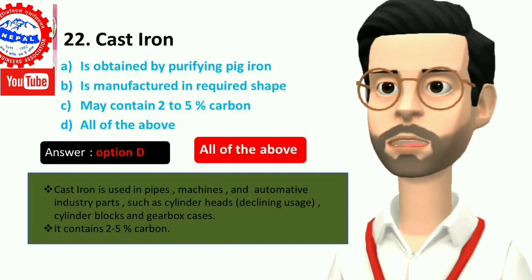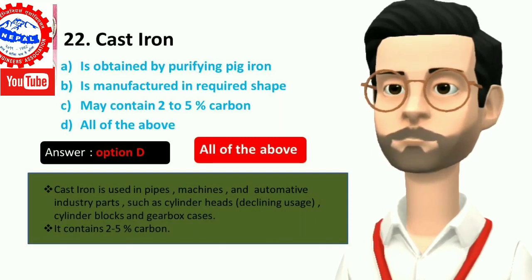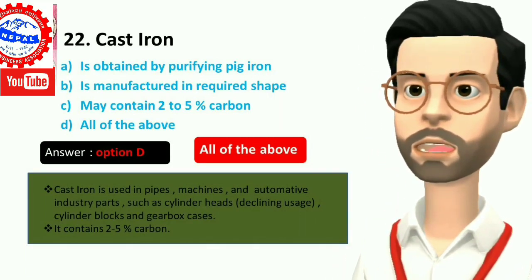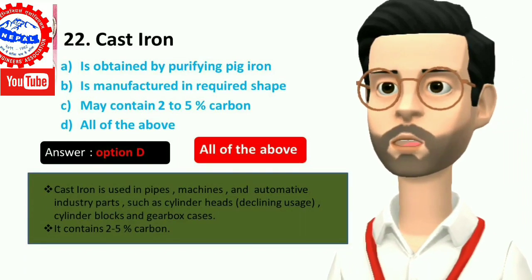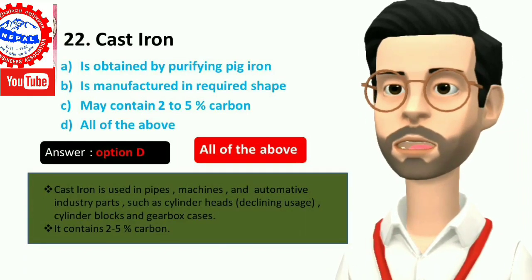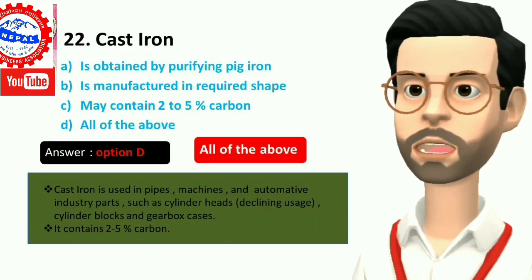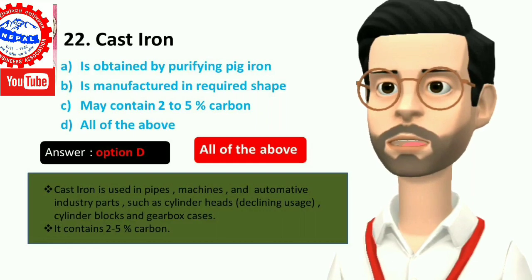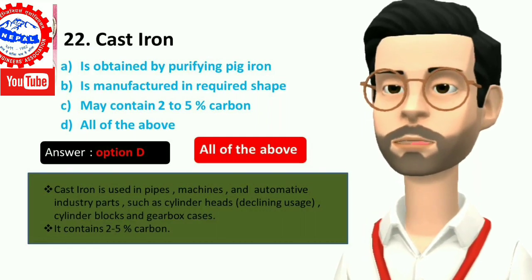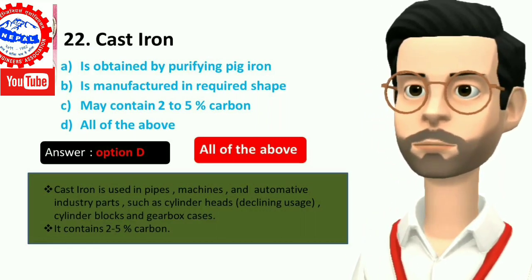Twenty-two, cast iron: A) is obtained by purifying pig iron, B) is manufactured in required shape, C) may contain 2 to 5 percent carbon, D) all of the above. Cast iron is used in pipes, machines, and automotive industry parts such as cylinder heads (declining usage). Answer is option D, all of the above.